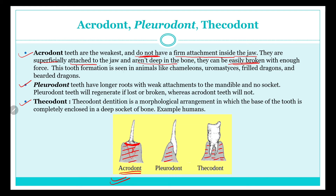Acrodont tooth formation is seen in chameleons, uromastix, frilled dragons, and bearded dragons. Pleurodont teeth have longer roots with weak attachments to the mandible and no socket. The root area is longer in pleurodont but attachment is still weak. Importantly, pleurodont teeth will regenerate if lost, but acrodont teeth will not.